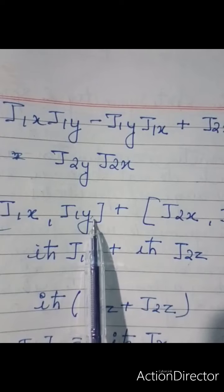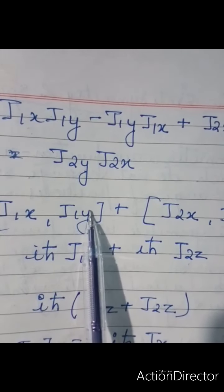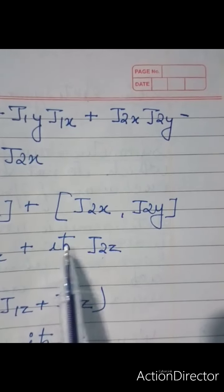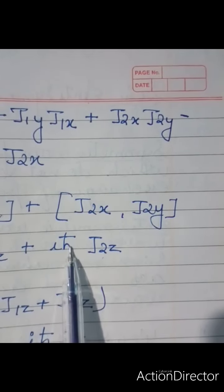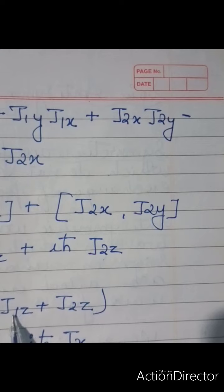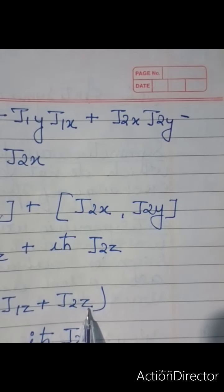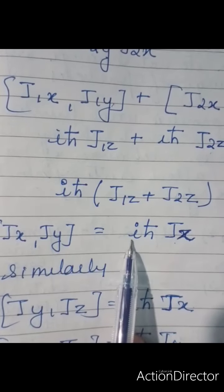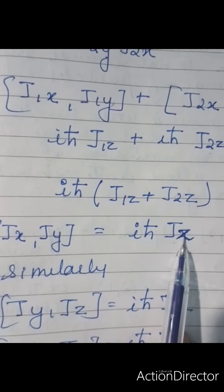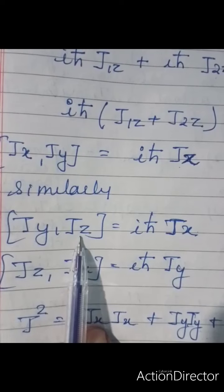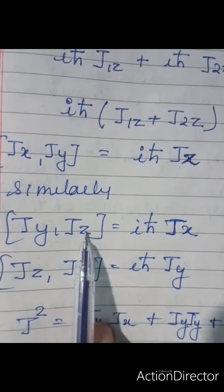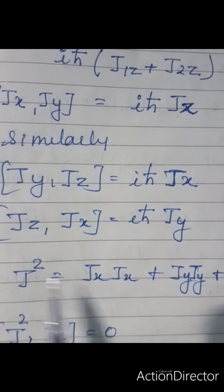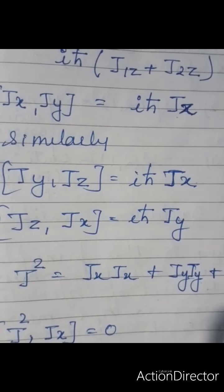We know that [J1x, J1y] = iħJ1z, since if it is xy we write z. Similarly, [J2x, J2y] = iħJ2z. Taking iħ common, what is left is J1z + J2z. So [Jx, Jy] = iħ(J1z + J2z), which is nothing but iħJz. Similarly, [Jy, Jz] = iħJx, and [Jz, Jx] = iħJy. And J² = Jx² + Jy² + Jz².